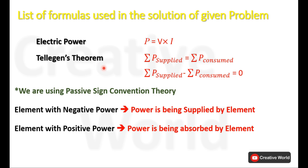According to intelligence theorem, the power supplied to a network is always equal to the power consumed by the elements of that network, and if we add these two powers their result will be zero.